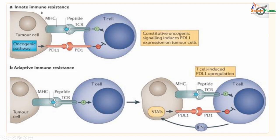Now, what happens in innate immune resistance? You have the tumor cell, the MHC class 1, and the T cells with the T cell receptor. The MHC class 1 is presenting the tumor antigen - which could be a peptide - and this is recognized by the TCR. It is recognized, but still because of the binding of the PD-L1 of the tumor cell to the PD-1 of the T cell, this particular pathway is inhibited. Therefore, the tumor cell is not effectively killed by the T cell despite the recognition. This is innate immune resistance.